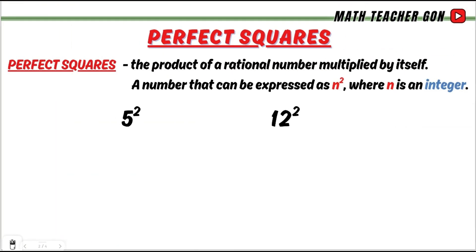First, what is a perfect square? It is a product of a rational number multiplied by itself. In simpler terms, it is a number you get when you multiply an integer by itself.